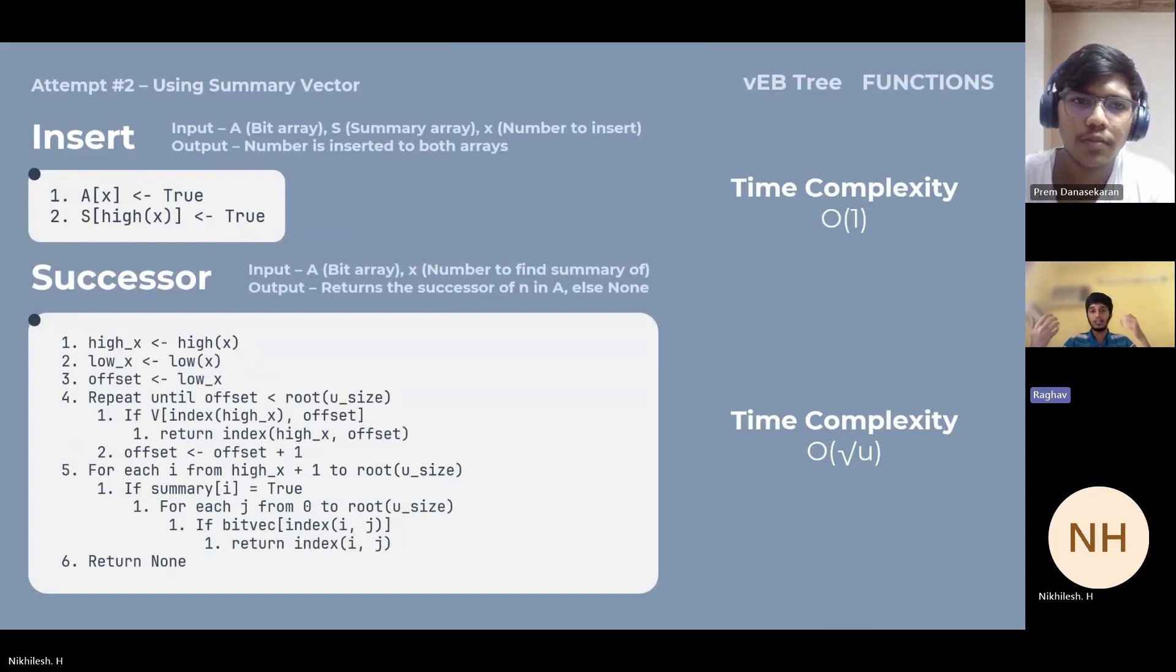A number is represented in binary form. The first half high bits of the number is the high effect, whereas the lower half is the low effect. The high effect tells you the cluster number. For successor, you go through each number in cluster x and find the successor. If it's not there, you go to the summary and find the next value which is present.